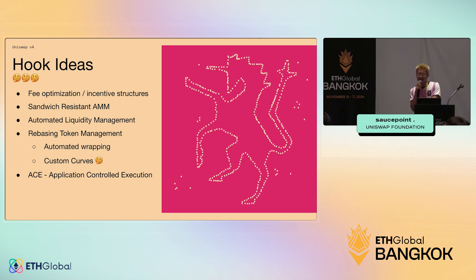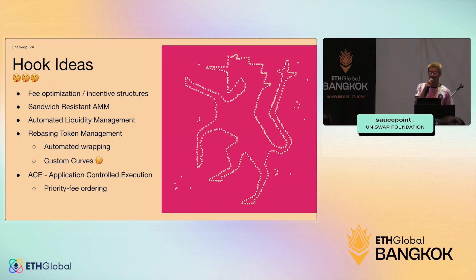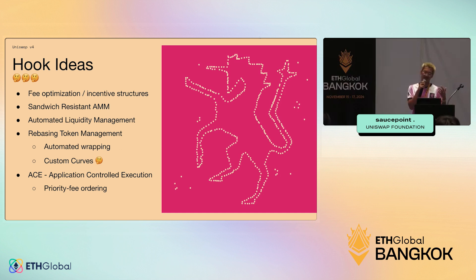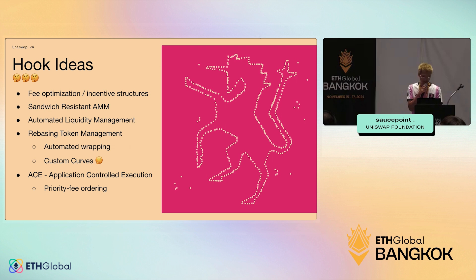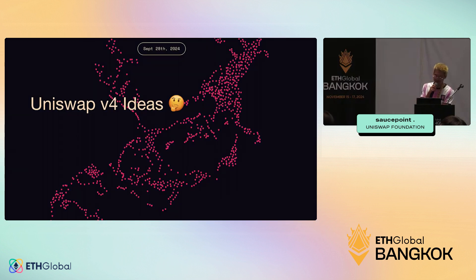Another big research area is application-controlled execution, also called app-specific sequencing or ASS. Related to Dan Robinson's work, in a hook you can in theory control the order of transactions being fulfilled — ordering them based on some auction or fee mechanism.